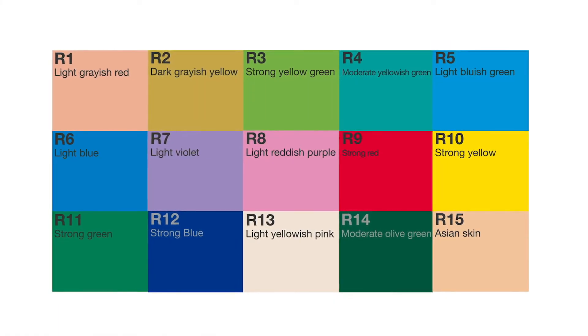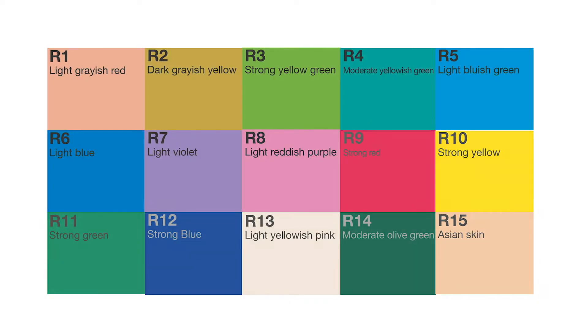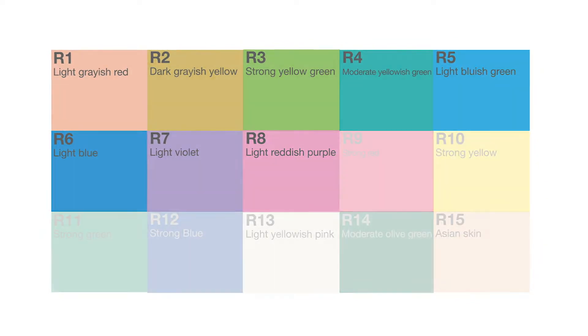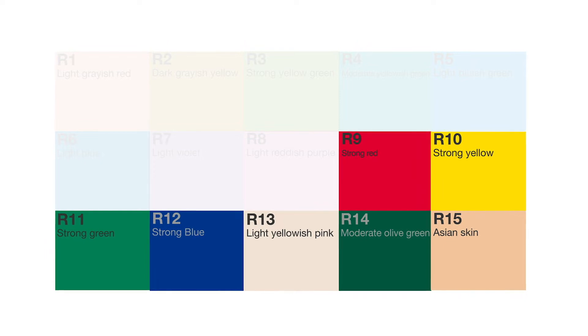CRI, color rendering index, is based upon the evaluation of 15 colors using the human eye as the observer. The first eight colors are what the RA or CRI score is based on, and R9 through R15 are additional colors that allow you to further evaluate the quality of a light source. You may hear of CRI Extended, which is a score given based upon the evaluation of all 15 colors, but it is not the standard that lighting manufacturers are using when scoring their lights. CRI was designed to score a light based upon how the human eye would accurately perceive colors under ideal daylight conditions, allowing us to examine how light sources such as mercury vapor, fluorescent, incandescent, and LED will perform — though originally it was designed to judge fluorescent lamps.